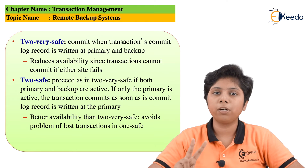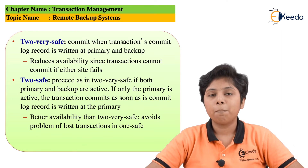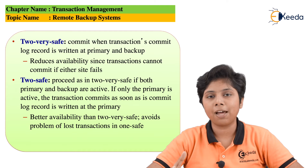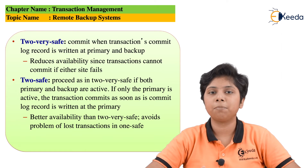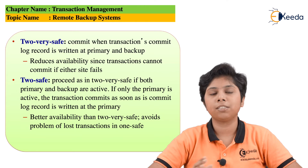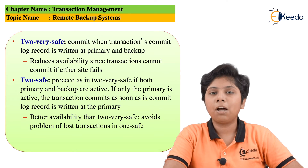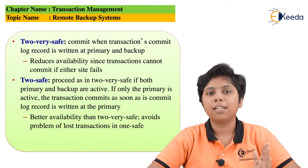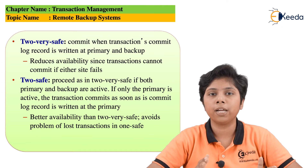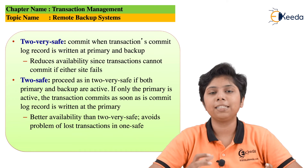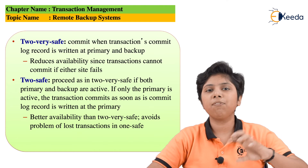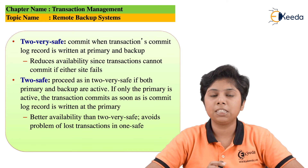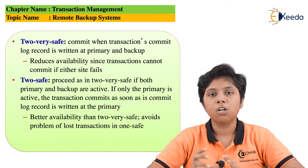The next variation is two-safe. It behaves like two-very-safe when both primary and secondary are active. But if only one of them is active, then if either the primary or the secondary has the updated log records, the transaction is considered committed. This reduces the time to commit significantly, because it avoids the strict two-condition requirement of two-very-safe while also avoiding the data loss risk of one-safe.